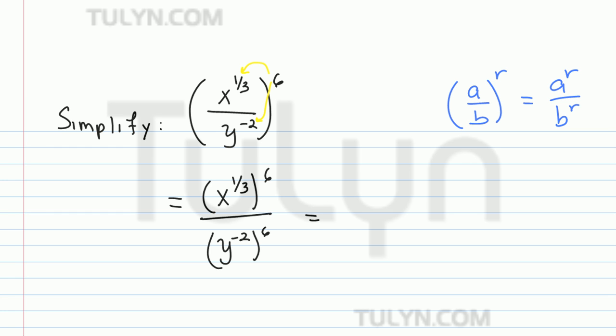the next rule we should use is that if you take any number to a power and then take it to another power, what you do is you multiply the exponents.